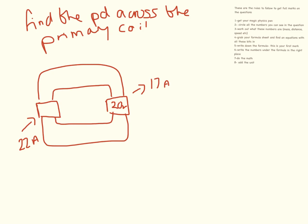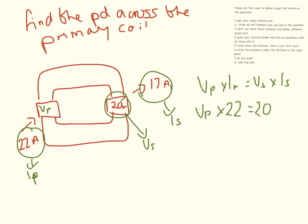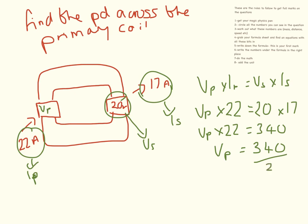Another pictorial one to interpret. We have the current in the secondary coil — that is Is — and the potential difference across the secondary coil — that is Vs — and we need to find Vp. So Vp times Ip equals Vs times Is. Vp we don't know. Current in the primary coil is 22. Voltage in the secondary is 20 times 17 amps — so 20 times 17 equals 340. So Vp times 22 equals 340. Dividing by 22, we get 15.5 volts.